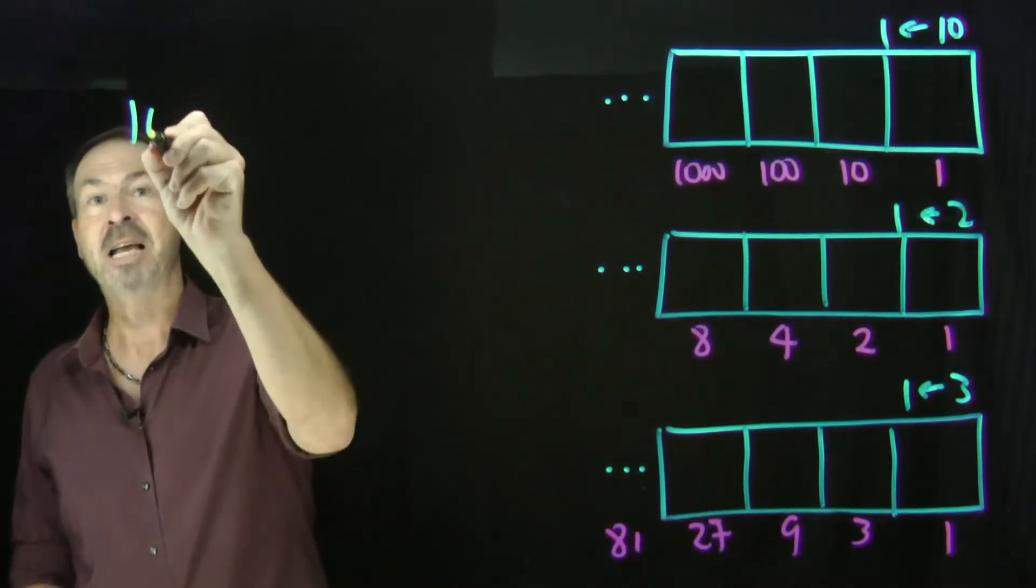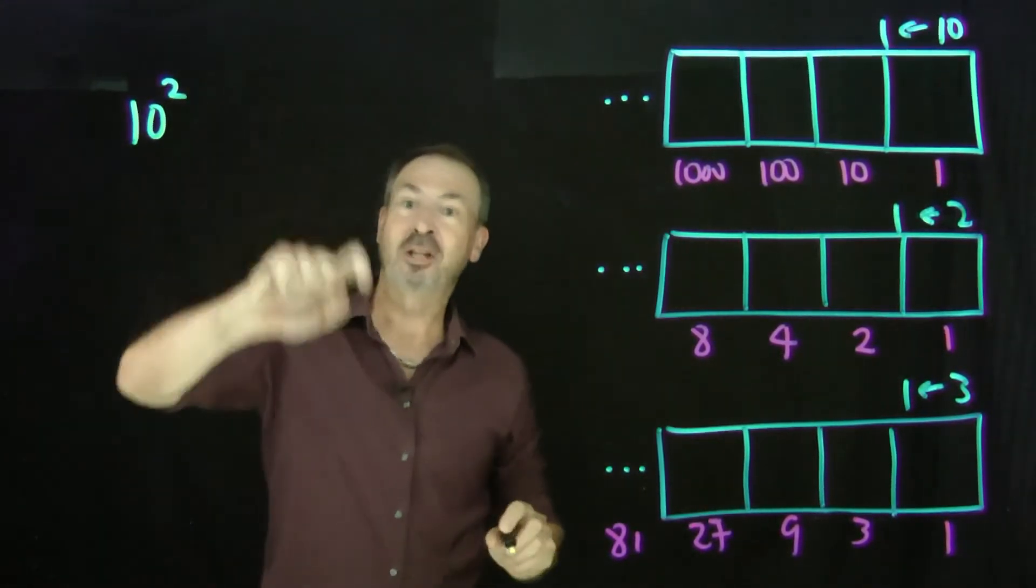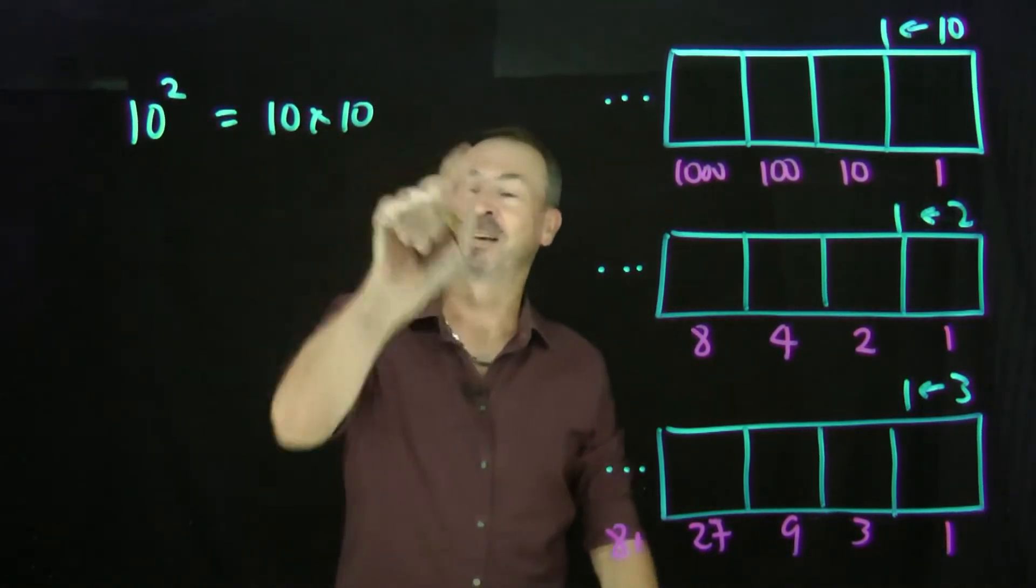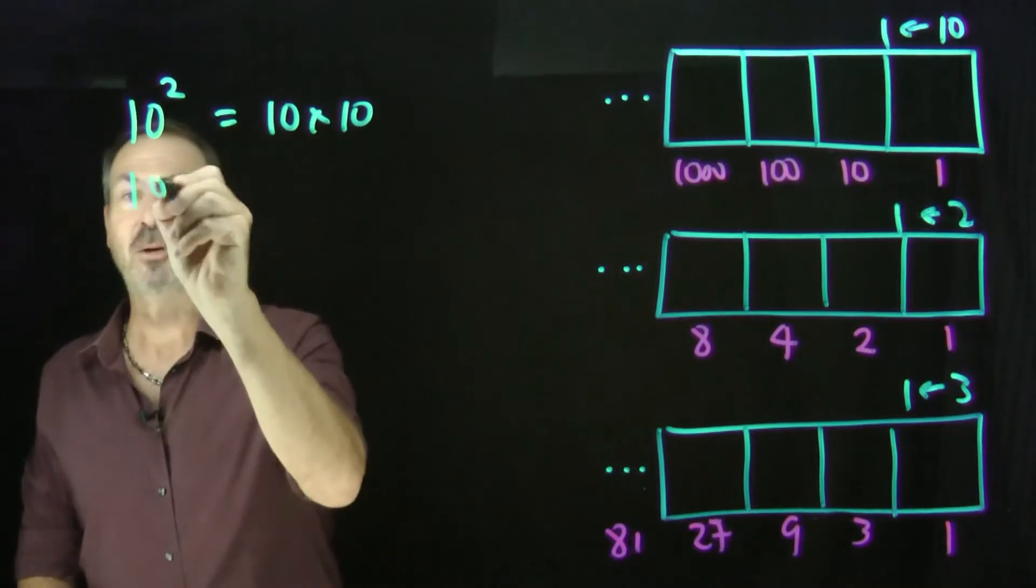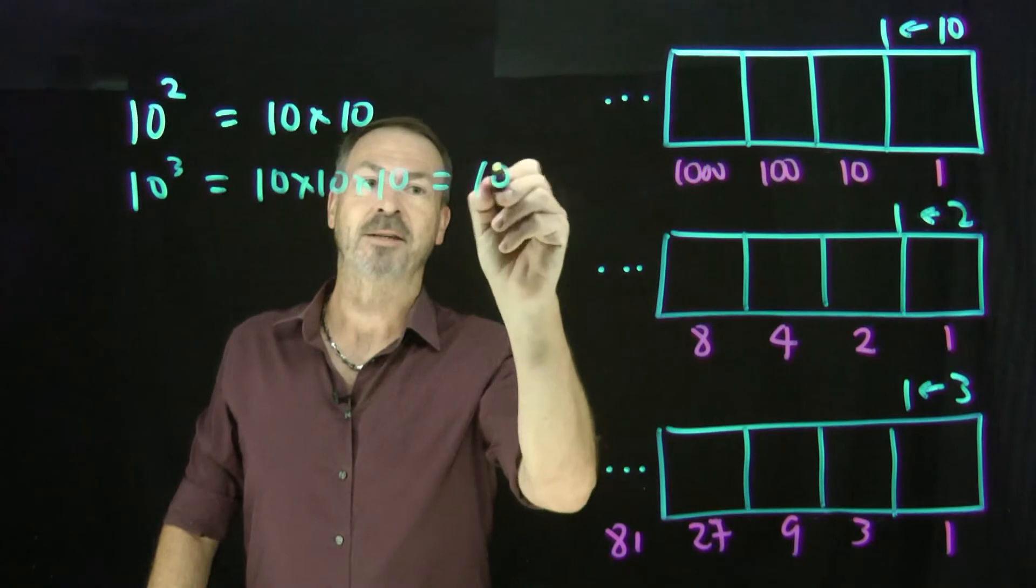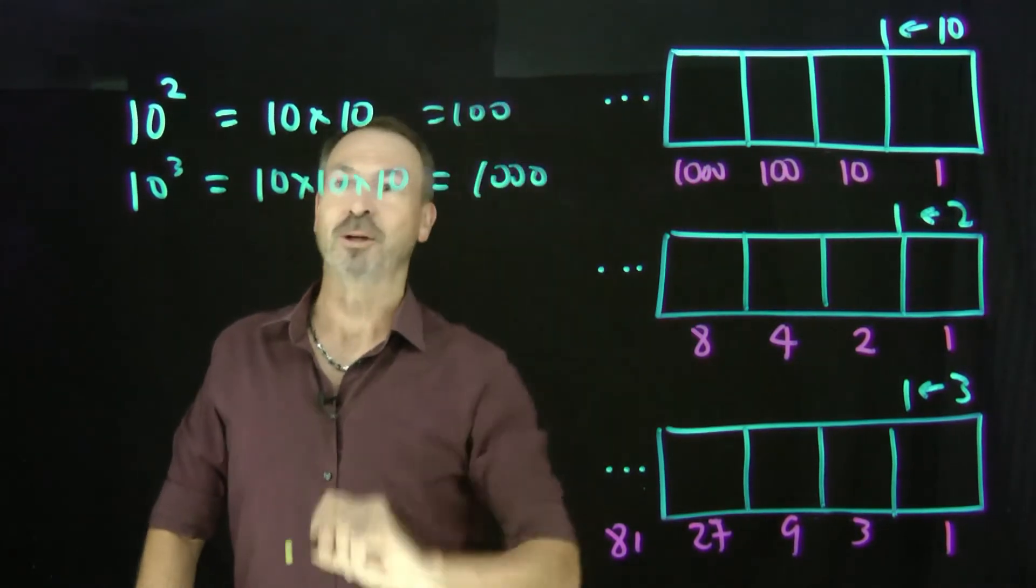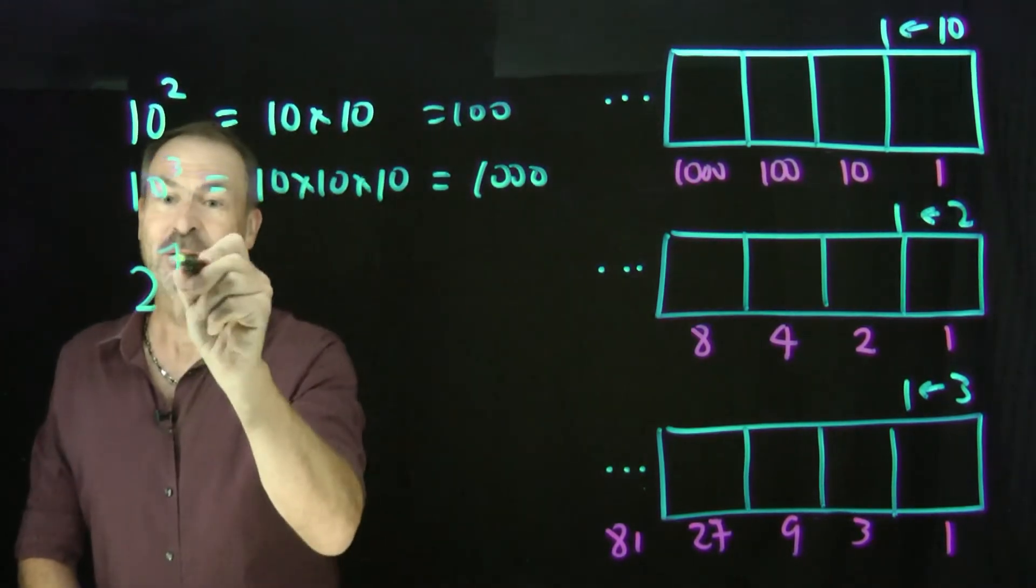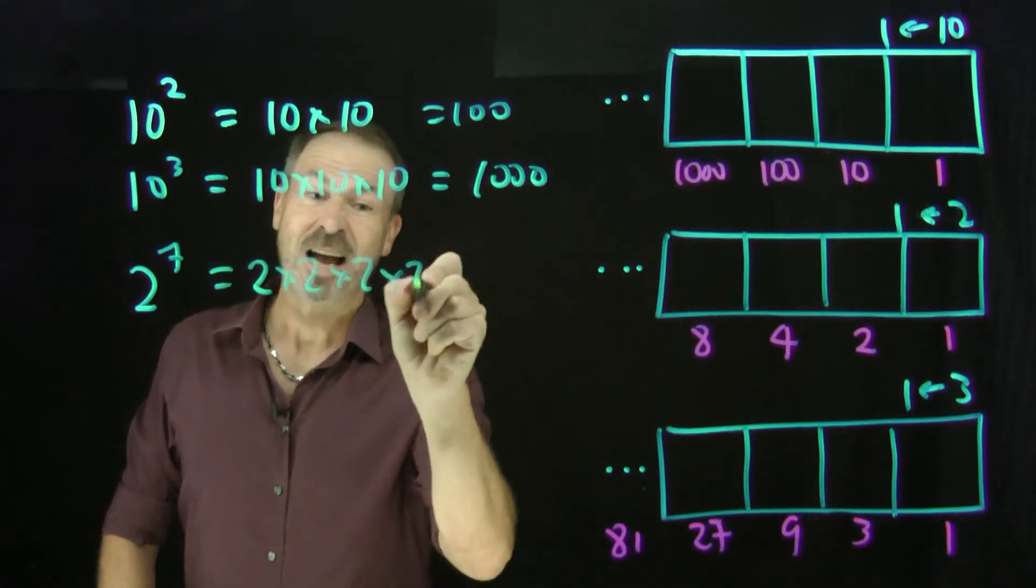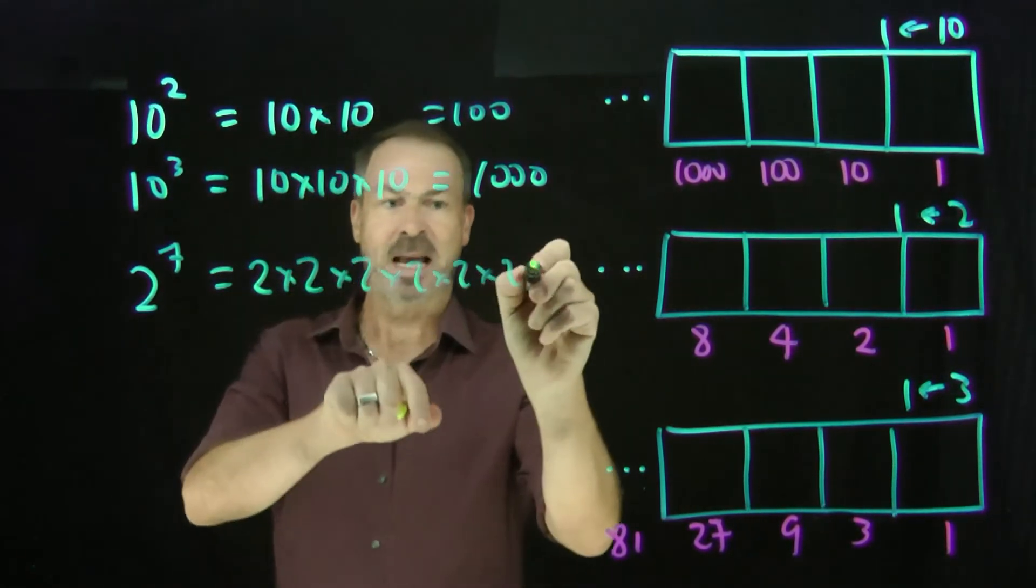For example, if I write the number 10 with a little superscript 2, the superscript means multiply the number 10 by itself two times to give me 100. Or 10 superscript 3—10 cubed—is 10 multiplied by itself three times to give myself 1,000. So there's 1,000, there's 100. Or 2 to the superscript 7 will be multiply the number 2 by itself seven times. It's going to be a big number—I think it's going to be 128.